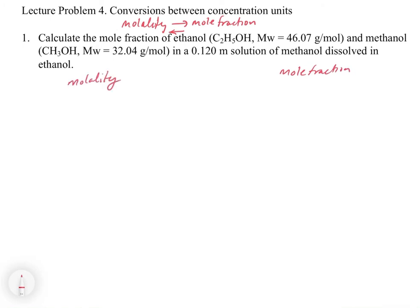What we have is a 0.120 molal solution. Remember, this is 0.120 moles for every 1 kilogram. Specifically, this is 0.120 moles of methanol for every 1 kilogram of ethanol, which is the solvent. In molality, we have units of moles per kilogram of solvent — so moles of methanol, which is the solute, dissolved in ethanol, which is the solvent. For mole fraction of methanol, it wants the mole fraction for both components, but we'll start with methanol.